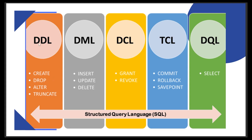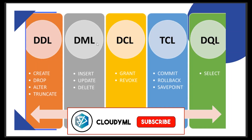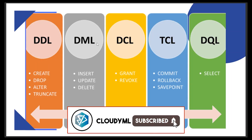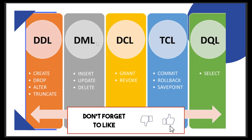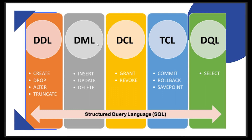DDL is nothing but the Data Definition Language. We use it to give a structure to the data and define how the data will look. It has four commands: create, drop, alter, and truncate. Then we have DML, which is the Data Manipulation Language. Once the tables are created, you can use DML to make changes to the table. Its commands are insert, update, and delete.